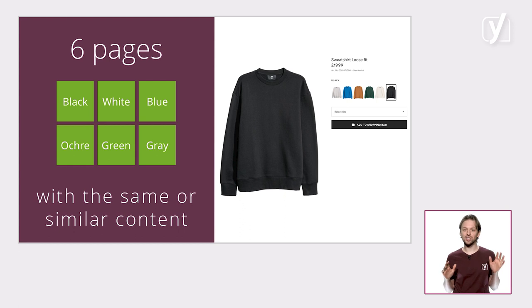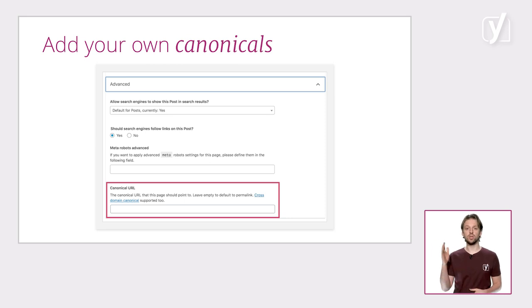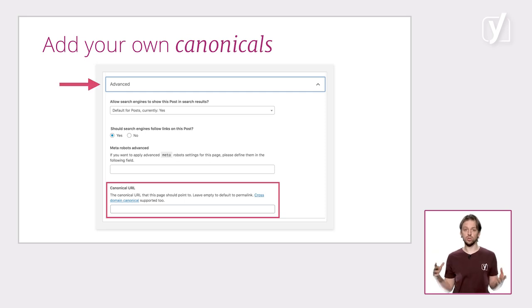Incidentally, H&M has canonicalized all URLs separately, so there's some SEO work still to be done there. Whether you have to implement canonicals depends on how your shop is structured. If all variations are on one URL, you don't have to do anything. However, if your product variations are on separate URLs, you can use the Yoast SEO meta box to manually canonicalize your product. It's not difficult at all — you simply go to the Advanced tab of the Yoast SEO meta box and paste the canonical link there.